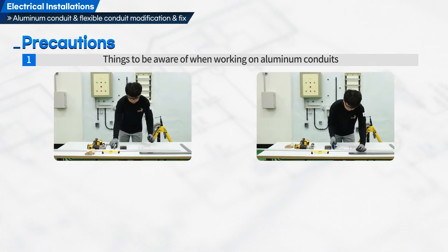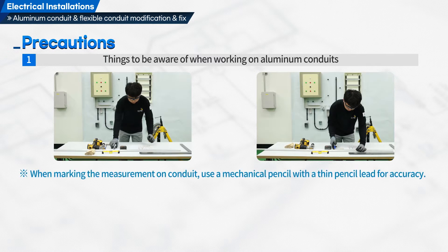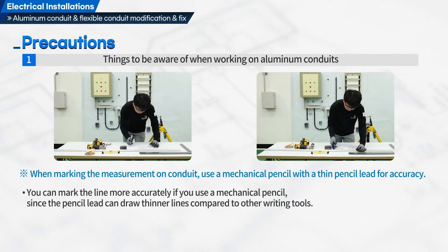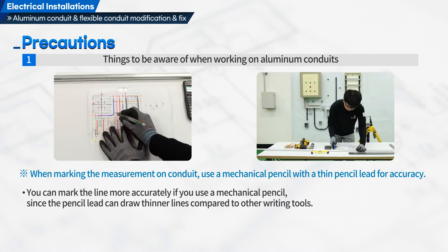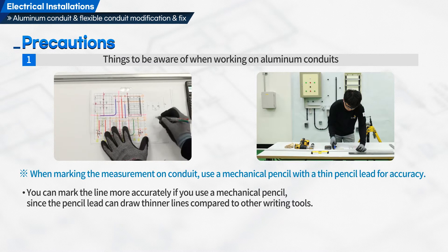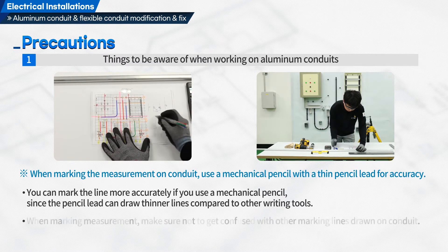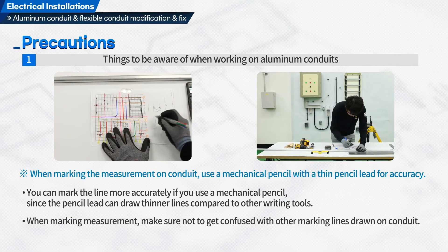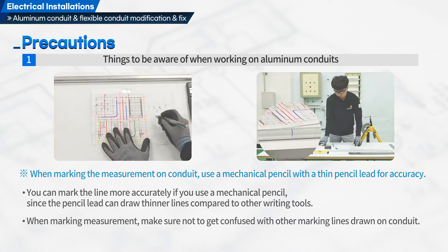Things to be aware of when working on aluminum conduits. First, when marking the measurement on the conduit, use a mechanical pencil with a thin pencil lead for accuracy. You can mark the line more accurately with a mechanical pencil since the pencil lead draws thinner lines compared to other writing tools. When marking measurements, make sure not to get confused with other marking lines drawn on the conduit.